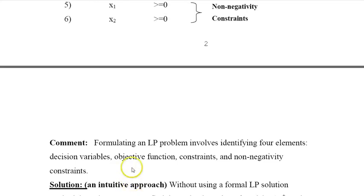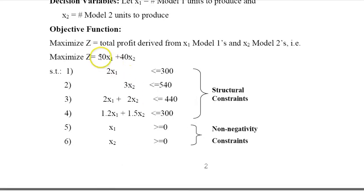If we look at this problem, we notice that the first model gives us a higher unit profit, so the idea is I want to produce as many unit ones as possible and use whatever leftover resources to produce unit two or snowmobile two. That means from my first department, 2x1 ≤ 300, so x1 can be as high as 150.